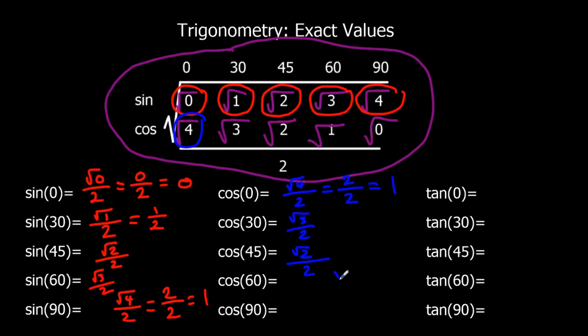Cos 60 is root 1 over 2, which I can change to 1 half. And cos 90 is root 0 over 2, which is 0 over 2, which is 0.